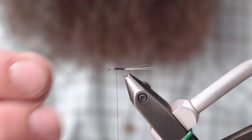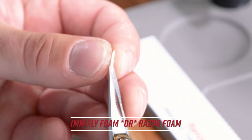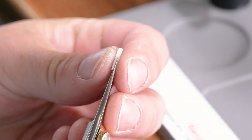Next, we're going to tie in a little piece of foam. I'm using one millimeter just because we're on an 18 and it fits a little better. But if you're tying something smaller than that, you would definitely want to use some razor foam.